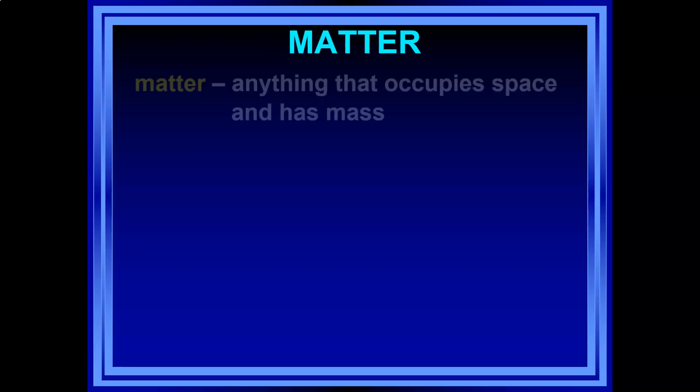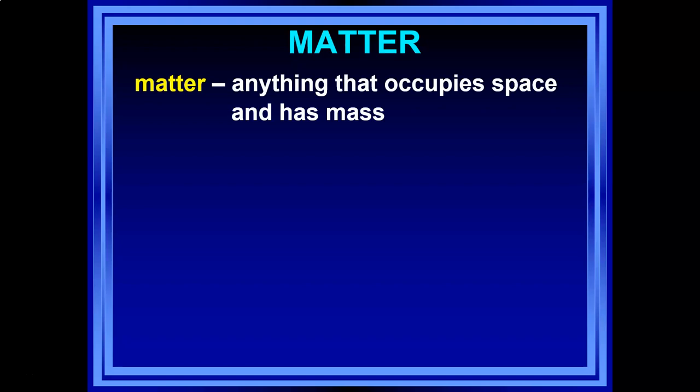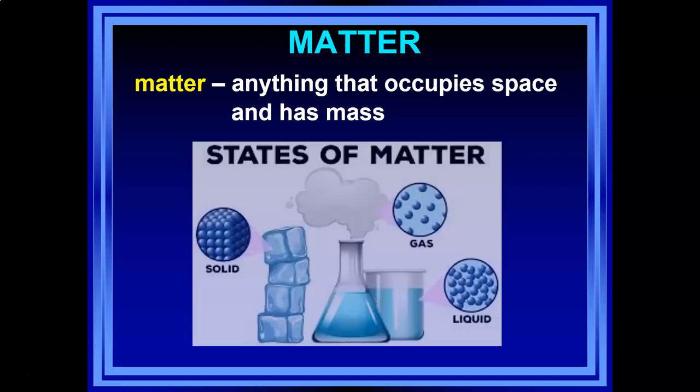We start out with the very basic idea that all matter — living, non-living, our own bodies — is composed of anything that occupies space and has mass. That's our official definition from the textbook. Matter can occur in three different states: solid, liquid, and gas.